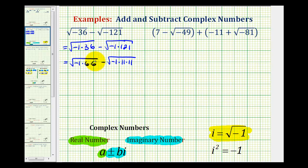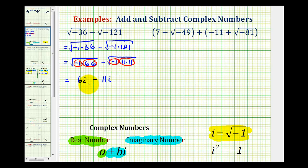Now because we have two equal factors, we have a perfect square factor and this will simplify, and so does the square root of negative 1 using complex numbers. This is going to simplify to a factor of 6 and a factor of i, or 6i. This simplifies to a factor of 11 and also a factor of i from the square root of negative 1. Now that we have two imaginary numbers, we can subtract these like like terms: 6i minus 11i is equal to negative 5i.